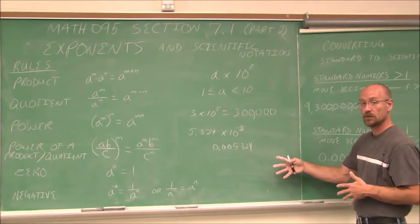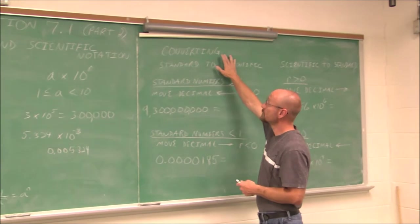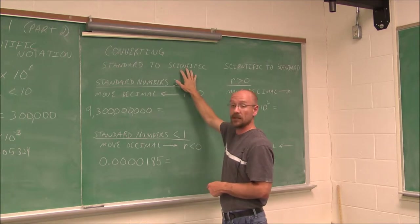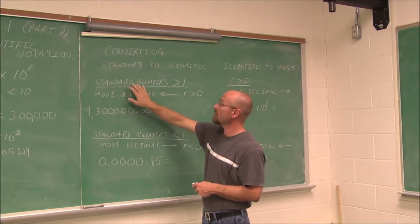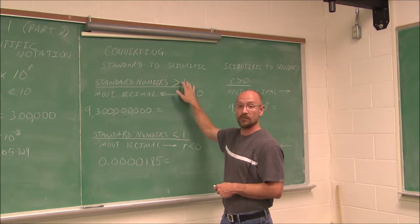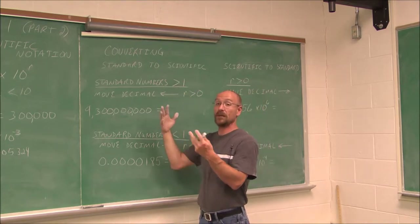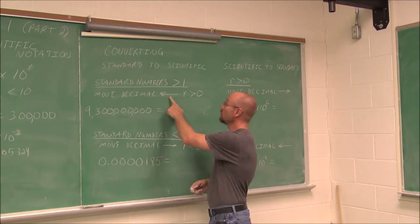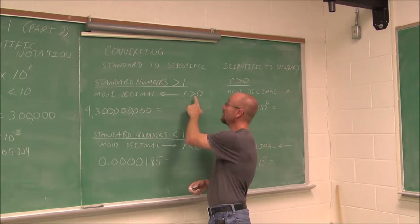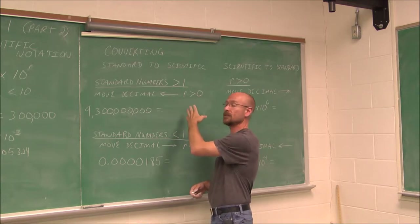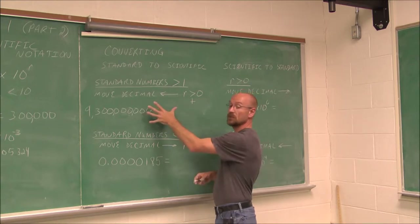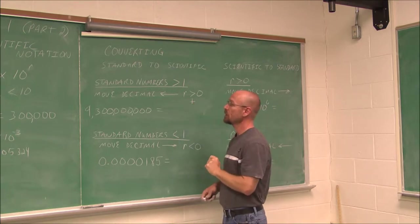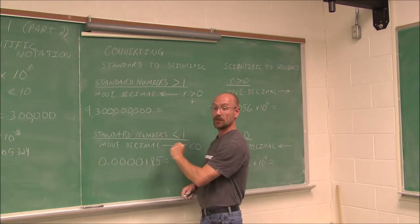So how do we make these conversions? If we have a number in standard form and want to write it in scientific form: if the number is greater than 1 — maybe 2, or maybe a billion — we move the decimal to the left, which makes r, that power of 10, greater than zero, a positive number. So if it's a large number, we'll have a positive power on our factor of 10.